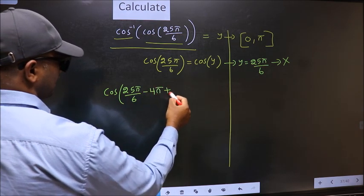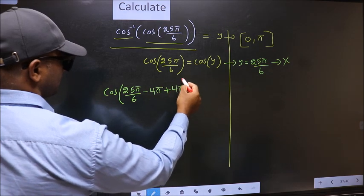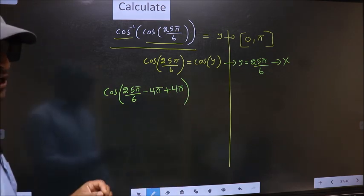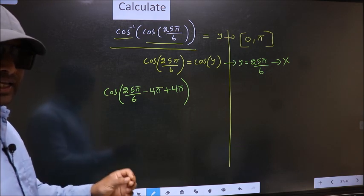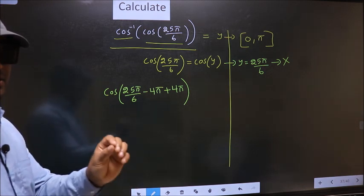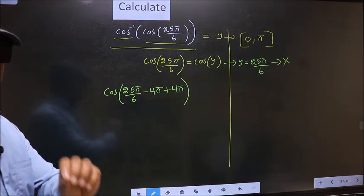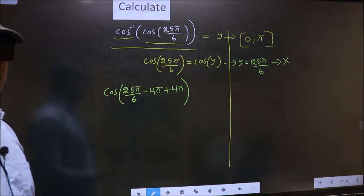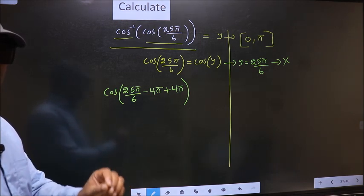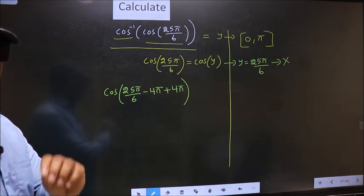Now whatever we are subtracting we should also add the same thing. Important point here. In cos inverse sums we should always subtract only the even multiples of pi. That is 2 pi, 4 pi, 6 pi, 8 pi like that.